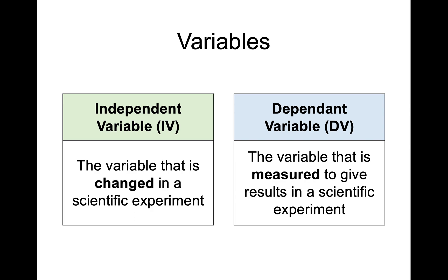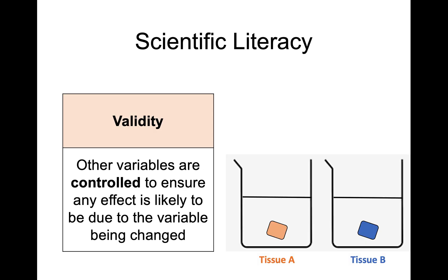Now in terms of validity, what we're going to be looking at is that we know the independent variable is going to be different between sets in the experiment, but every other variable should be the same. So we're going to control every other variable in order to ensure that any effect that we find between the two sets in your experiment is going to be due to the independent variable and nothing else.